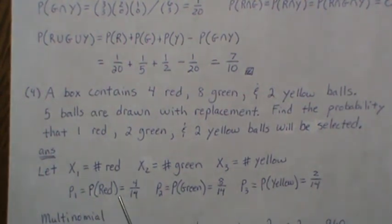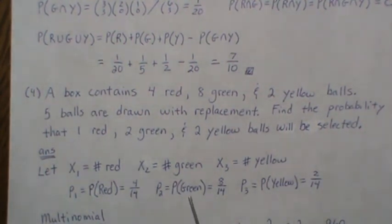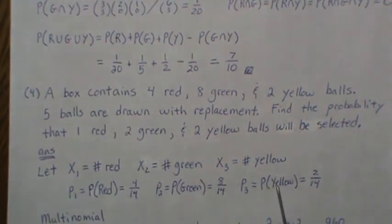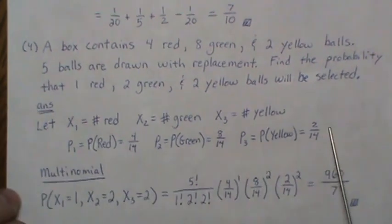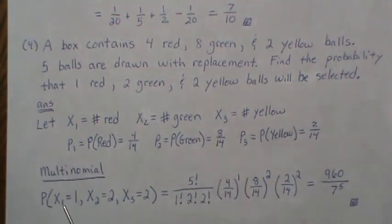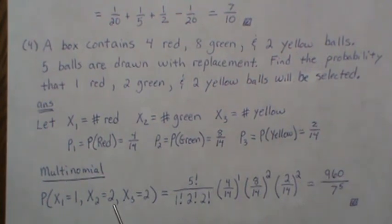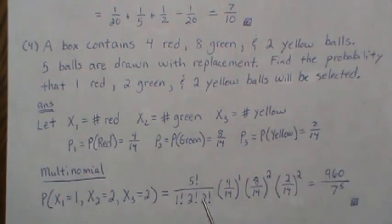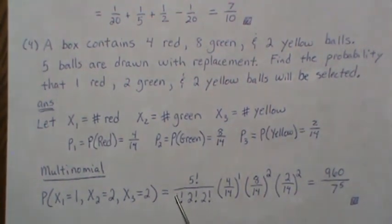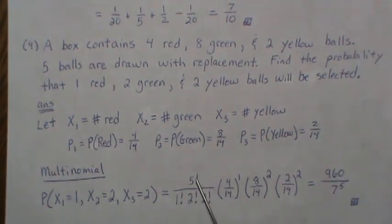Let x1 be the number of red, x2 be the number of green, x3 be the number of yellow. The probability of red is 4/14, probability of green is 8/14, and probability of yellow (p3) is 2/14. In the multinomial setting we want P(x1=1, x2=2, x3=2).